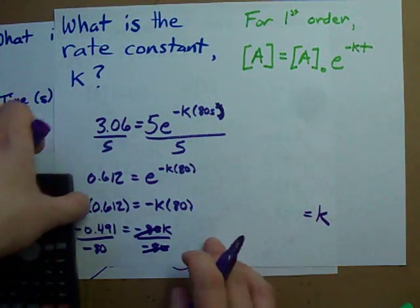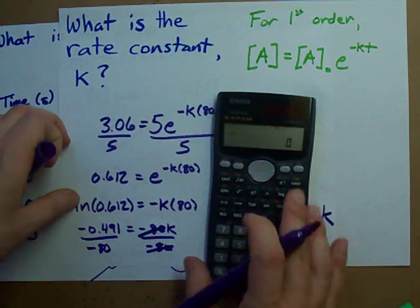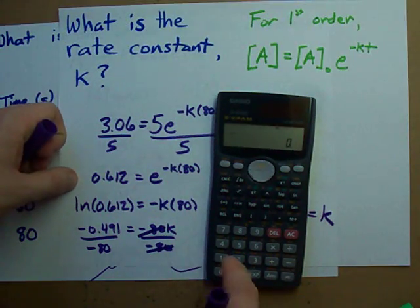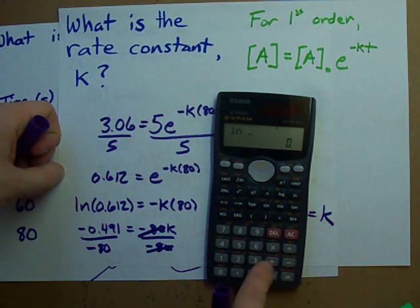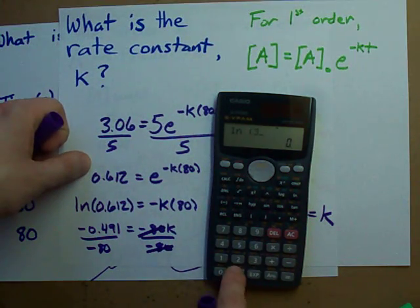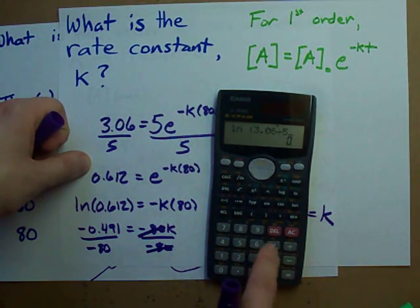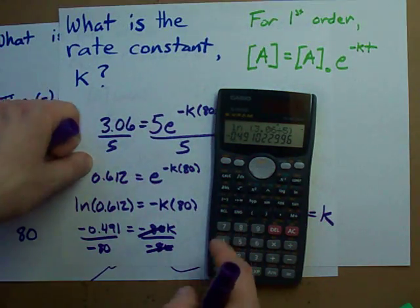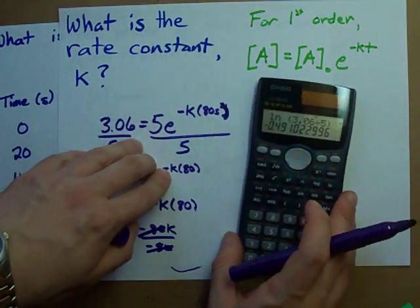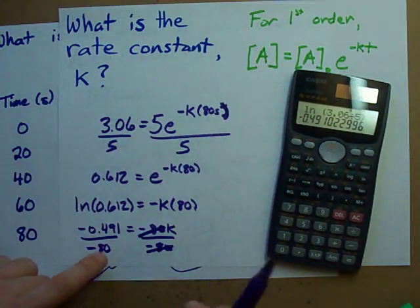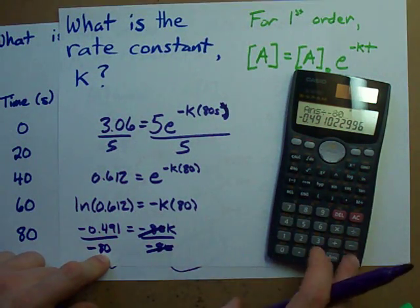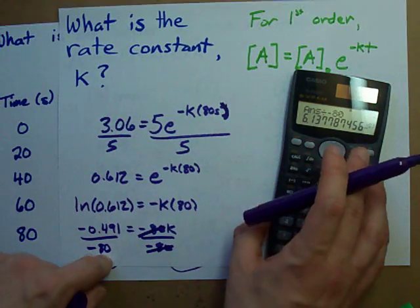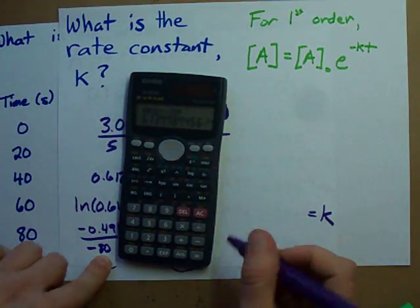What I get is that K is, oh man, I lost my number. It was the ln of 0.612. It was this number here. And then I had to divide that by negative 80. 6.14 times 10 to the negative 3. Done.